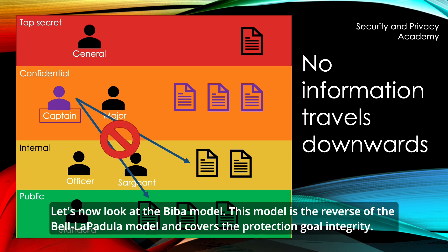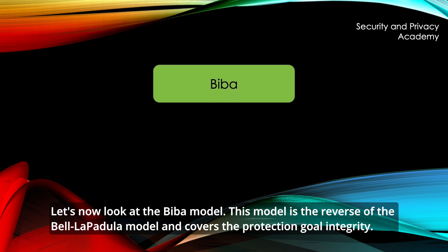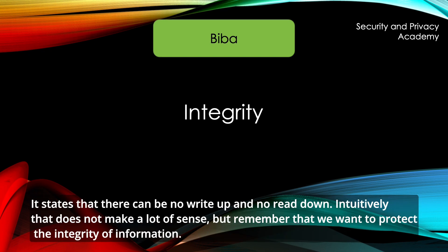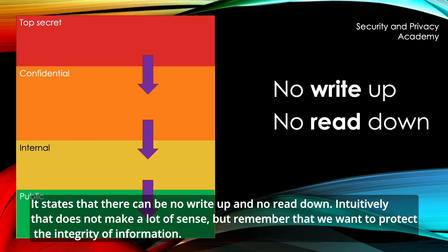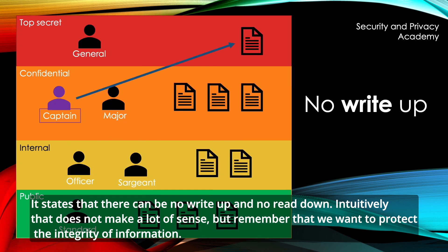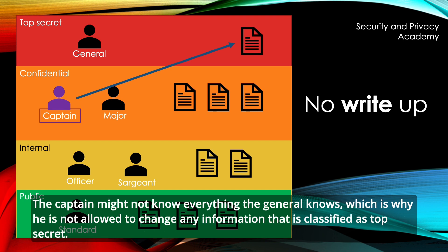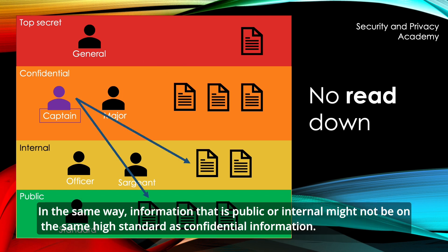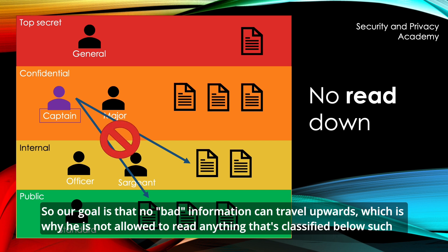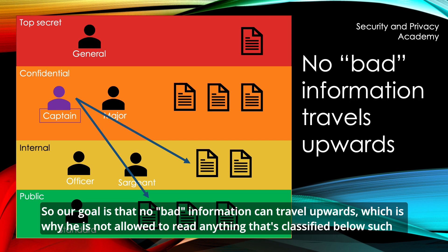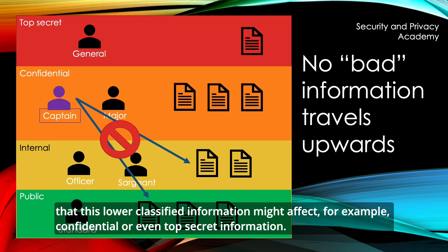Let's now look at the Biba model. This model is the reverse of the Bell-Lapadula model and covers the protection goal of integrity. It states that there can be no write-up and no read-down. Intuitively that does not make a lot of sense, but remember that we want to protect the integrity of information. The captain might not know everything the general knows, which is why he is not allowed to change any information classified as top secret. In the same way, information that is public or internal might not be on the same high standard as confidential information. So our goal is that no bad information can travel upwards, which is why he is not allowed to read anything classified below, such that this lower classified information might affect confidential or even top secret information.